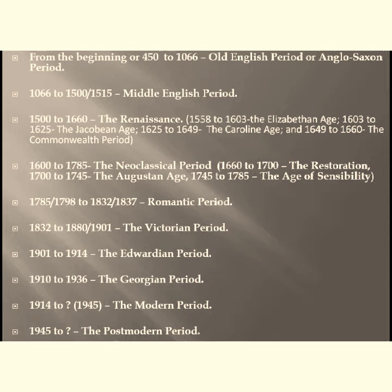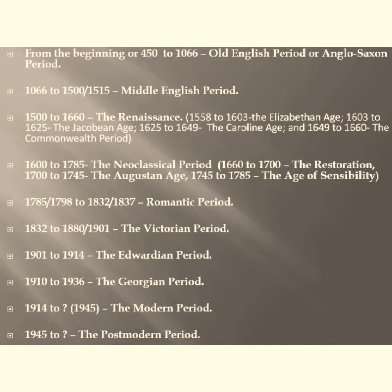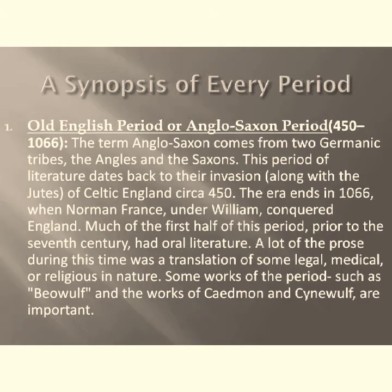These are the different periods of English literature. However, various historians have delineated the eras of British literature in different ways over time, and the above divisions are the most common ones.